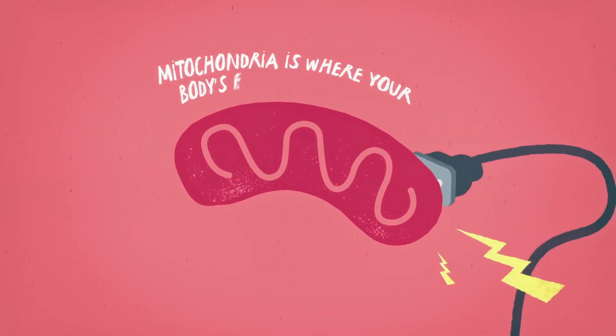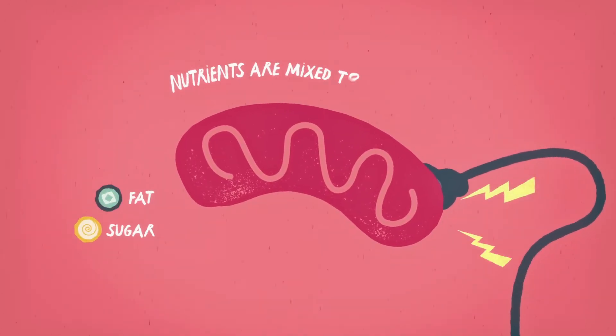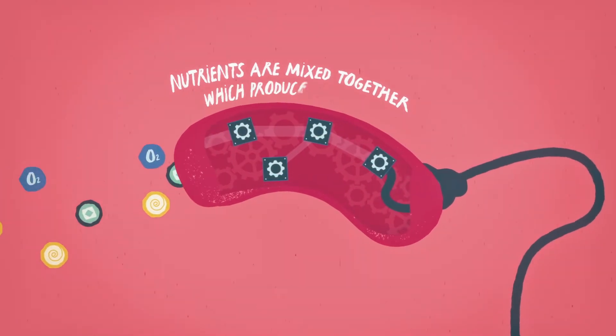Mitochondria is where your body's energy is created. Nutrients such as fat and sugar are mixed together with oxygen which produces energy.